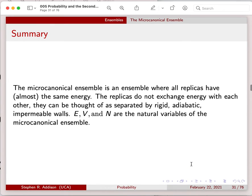A microcanonical ensemble is an ensemble where all the replicas have almost the same energy. We say almost because of that δE consideration. The replicas don't exchange energy with each other, and they can be thought of as separated by rigid, adiabatic, impermeable walls. Adiabatic walls are ones which don't transfer heat. We say that E, V, and N are the natural variables of a microcanonical ensemble.